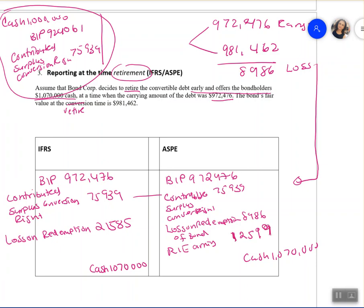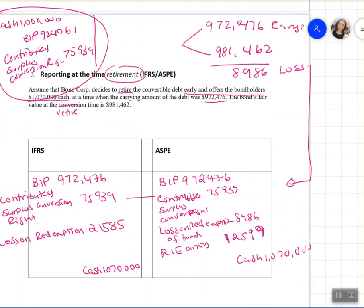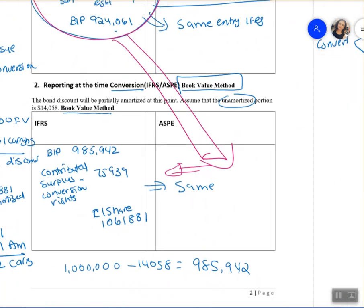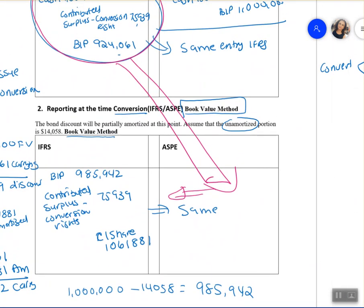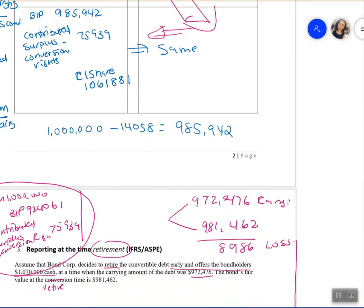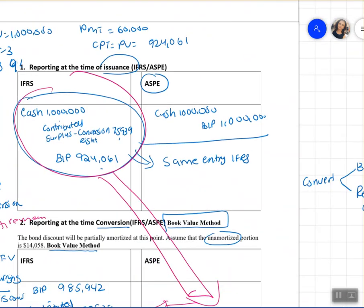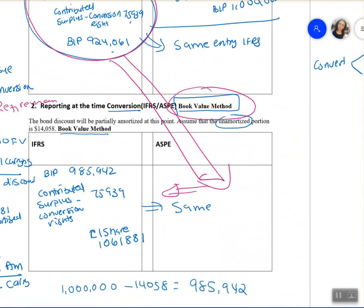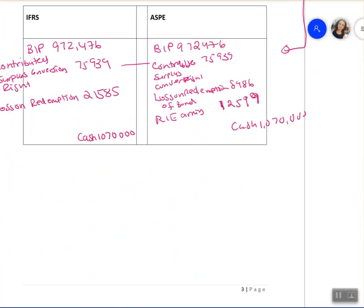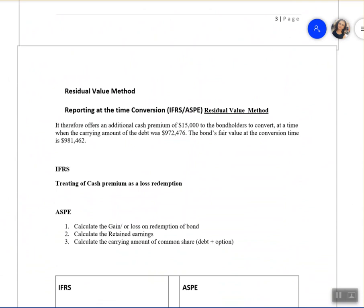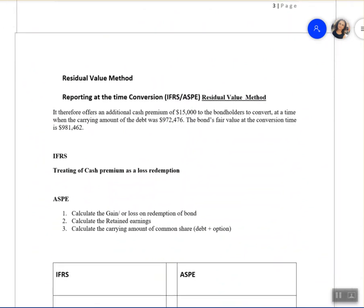If they don't retire, there's no need for a retirement entry. So those are the three points: issuance, conversion, and retirement. We've been using the book value method. The second method a company can use is the residual value method. To make it easier, the question states that at the time of conversion the company uses the residual value method instead of the book value method.